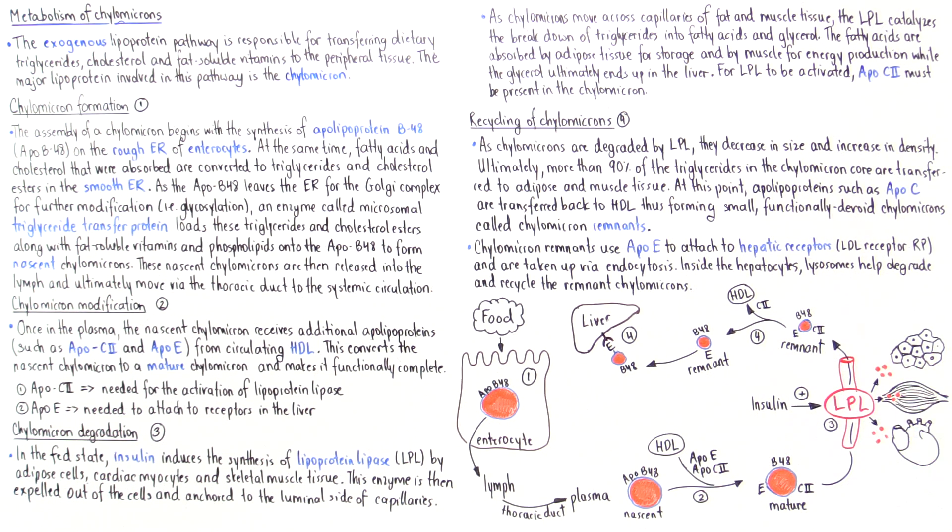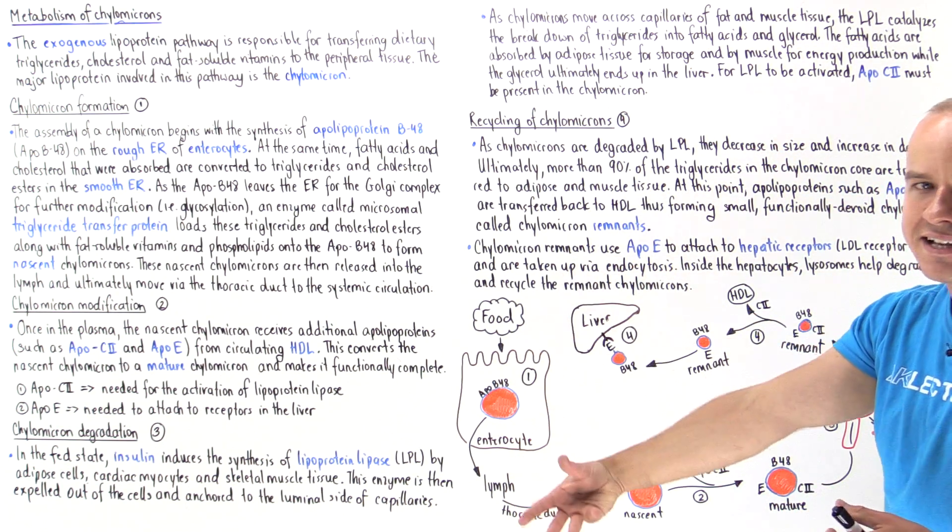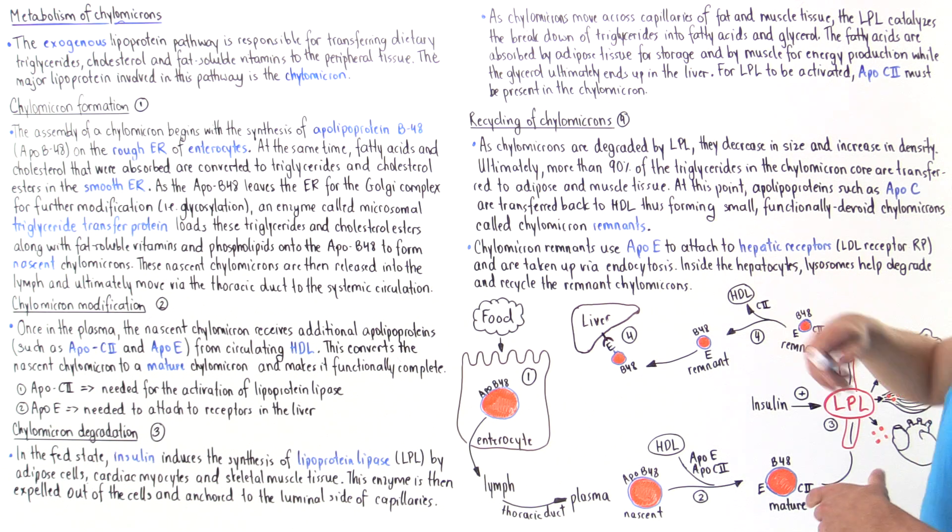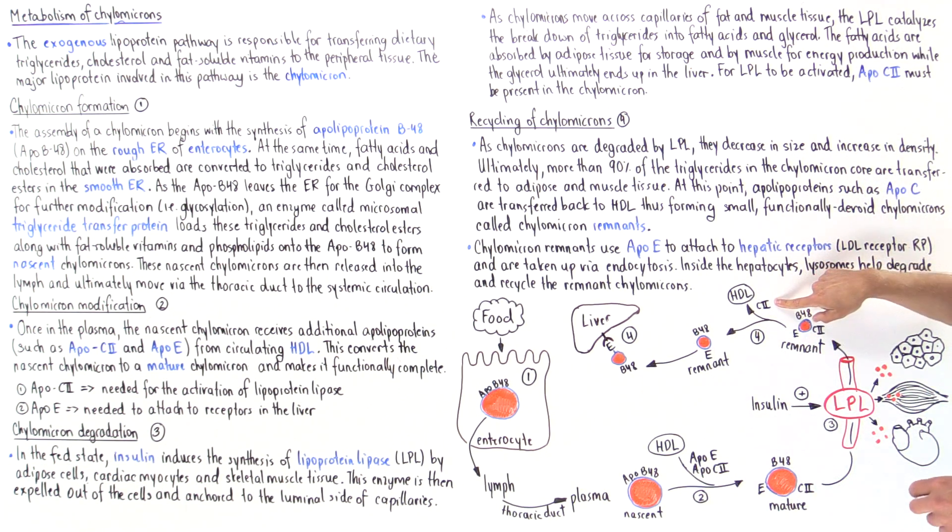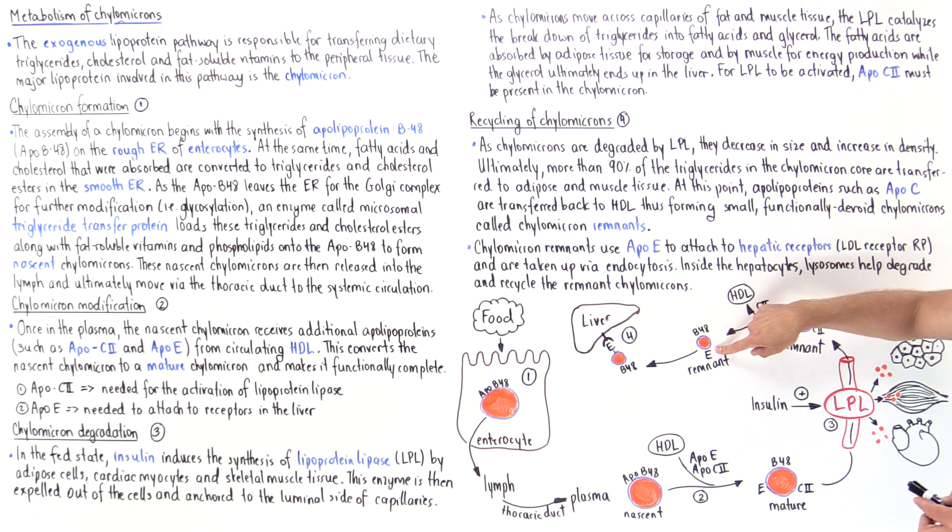Once we break down the majority of the triglycerides, we essentially form something called a remnant chylomicron. In a remnant chylomicron, over 90% of that initial triglycerides have been transformed into fatty acids which have been picked up by adipose tissue and muscle tissue. Once we form these remnant chylomicrons, HDL molecules then take back the apolipoprotein C2. So now we only contain apolipoprotein B48 and apolipoprotein E.